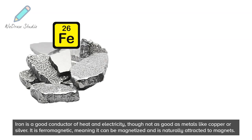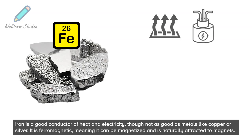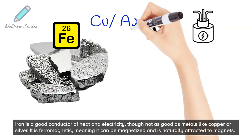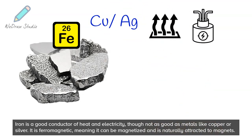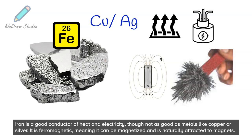Iron is a good conductor of heat and electricity, though not as good as metals like copper or silver. It is ferromagnetic, meaning it can be magnetized and is naturally attracted to magnets.